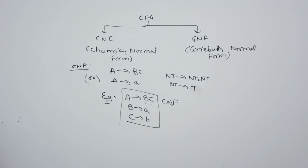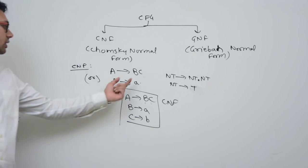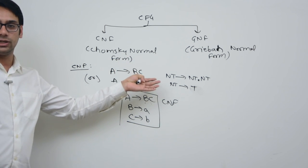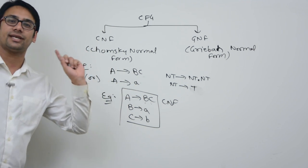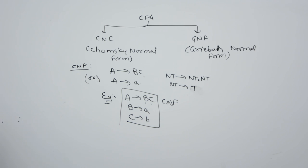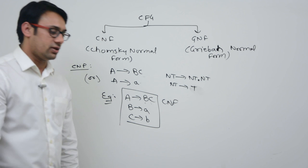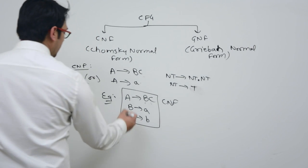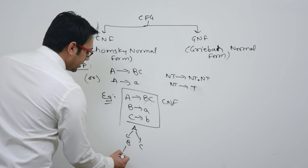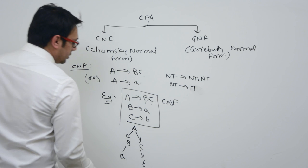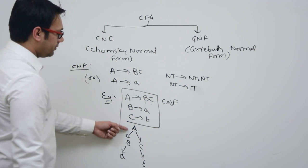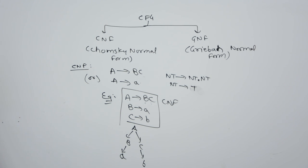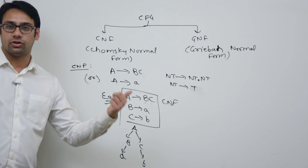The first advantage of CNF is that the length of each production is restricted — you can see B and C, the length of each production is exactly restricted; we don't have more than two variables or more than one terminal. The second advantage is that the derivation tree or parse tree obtained by a CNF grammar will always be a binary tree. Every parent will have exactly two children, because we are putting a restriction of having exactly two variables. So the derivation tree will always be a binary tree.